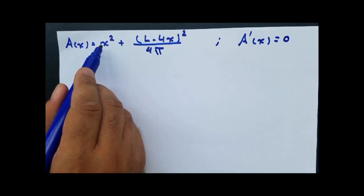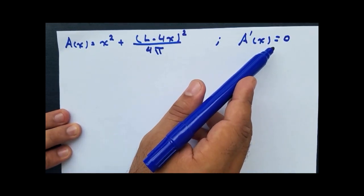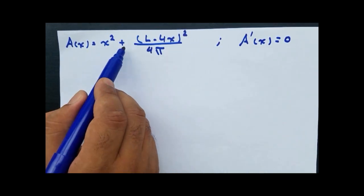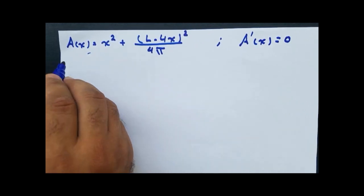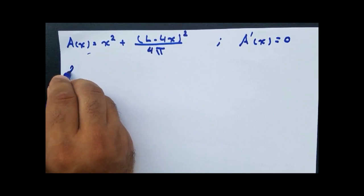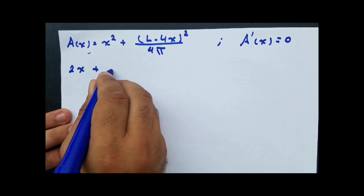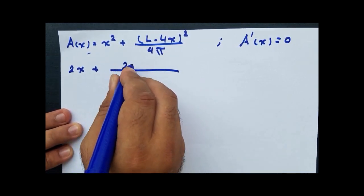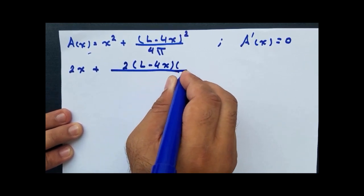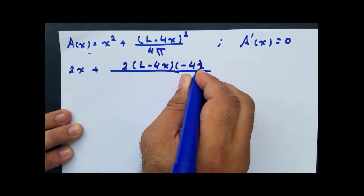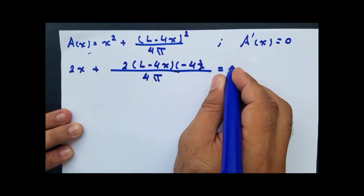By making the first differentiation of this equation equal to zero, we can find the positive value of x that makes the total area of the square and circle a minimum. The differentiation of A with respect to x gives: 2x plus 2 multiplied by (L minus 4x) multiplied by (minus 4) all over 4π equals zero.